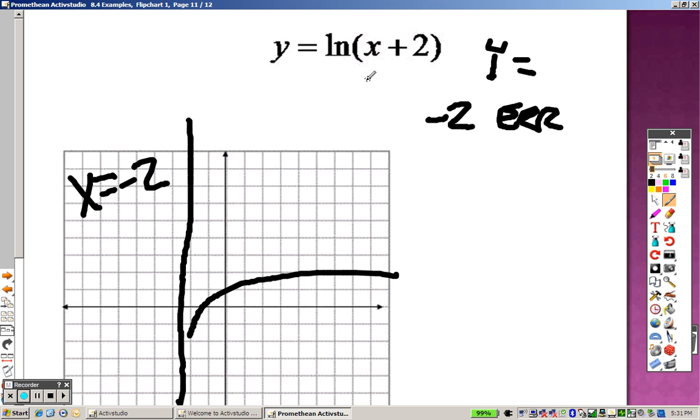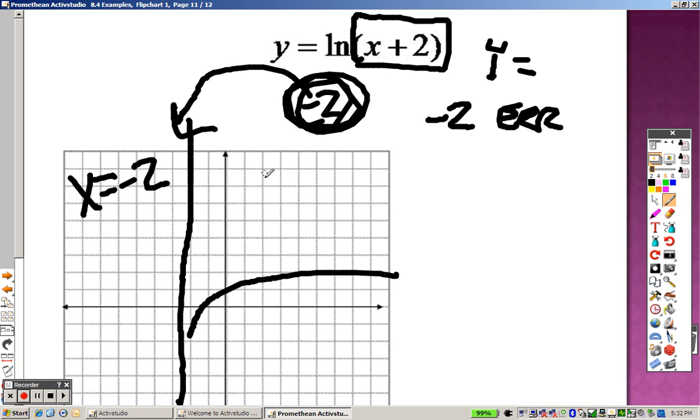Well, that means the asymptote is at x equals negative 2. So to find the vertical asymptotes for logs, it's whatever makes this 0 in here. Negative 2 plus 2 makes it 0, which is why negative 2 is where the vertical asymptote is.